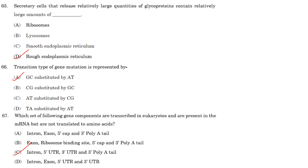Transition-type mutation is represented by GC substituted by AT. G is a purine, A is a purine, C is a pyrimidine, and T is a pyrimidine. Answer is option A. Transition is when a purine is substituted by another purine or a pyrimidine is substituted by another pyrimidine.